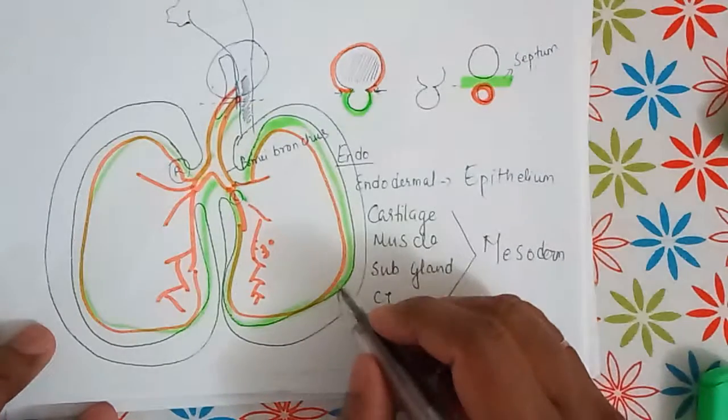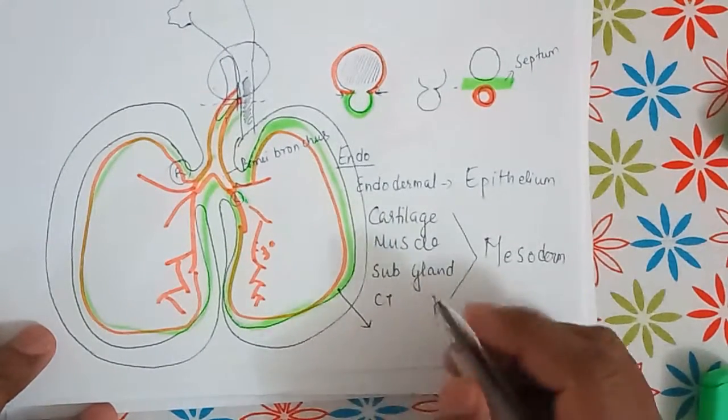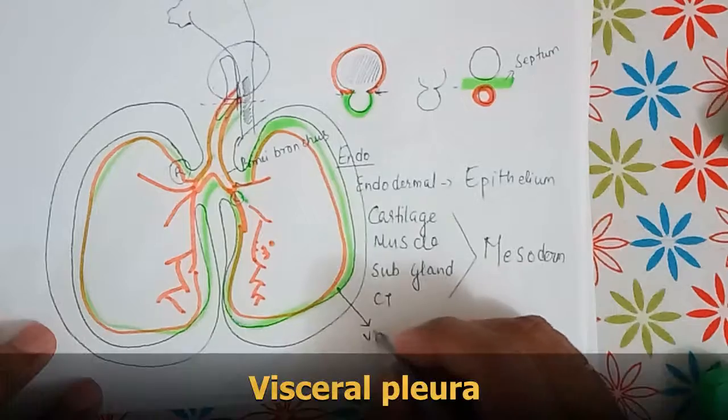The part of the pleura which covers or lies next to the lung is called the visceral layer.